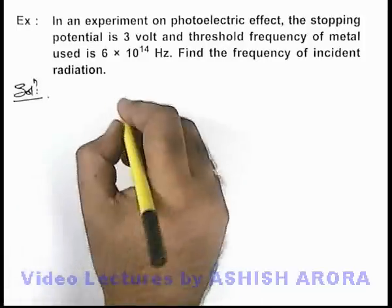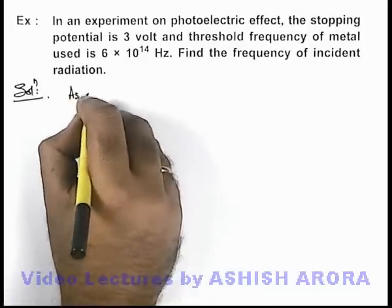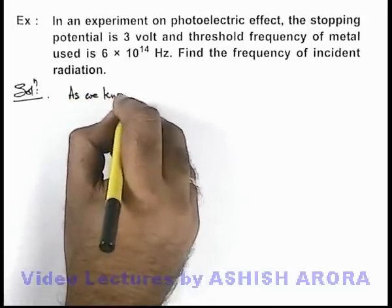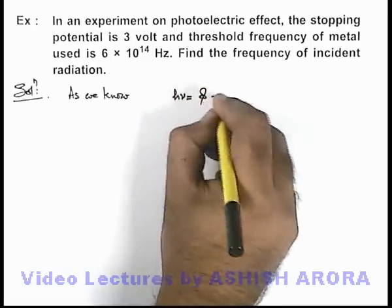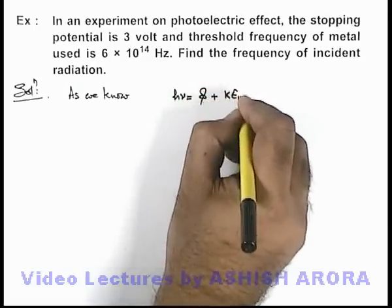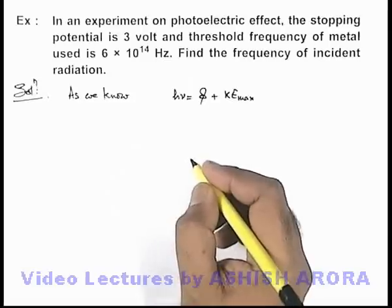In this situation, we can directly say that as we know, the photon energy h nu is used in two parts, which is the work function plus the maximum kinetic energy of the ejected photoelectrons.